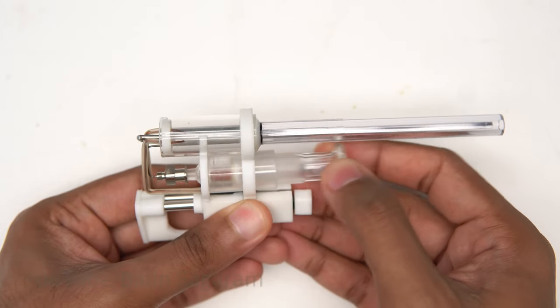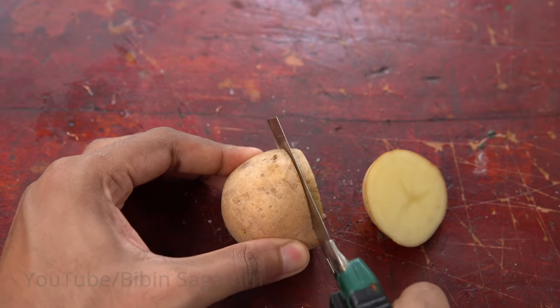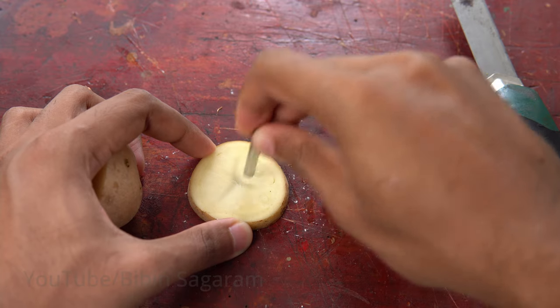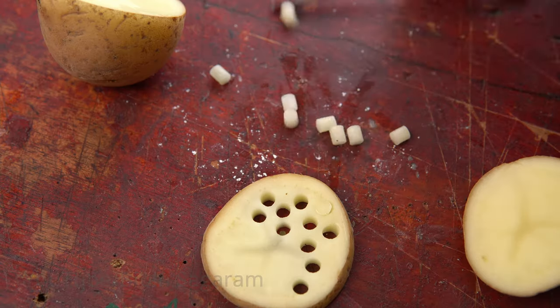Now everything is ready. First the pump is used to fill the chamber with air. Now we need projectile. Why not use potato itself. I am using a pipe to cut the potato to exact diameter.